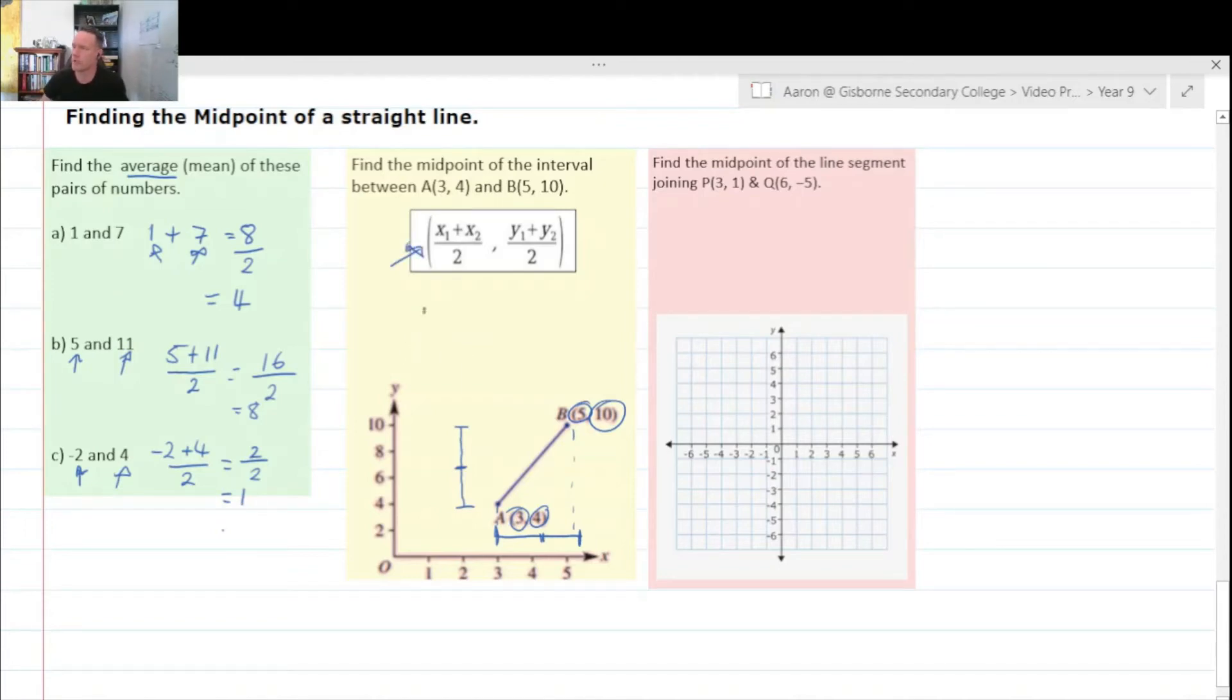So if we know what both the x points are, we can plug them in. So x points for three and five, I'm going to make that x1 and x2. So three plus five over two, let's put in our big brackets, and four plus ten over two.